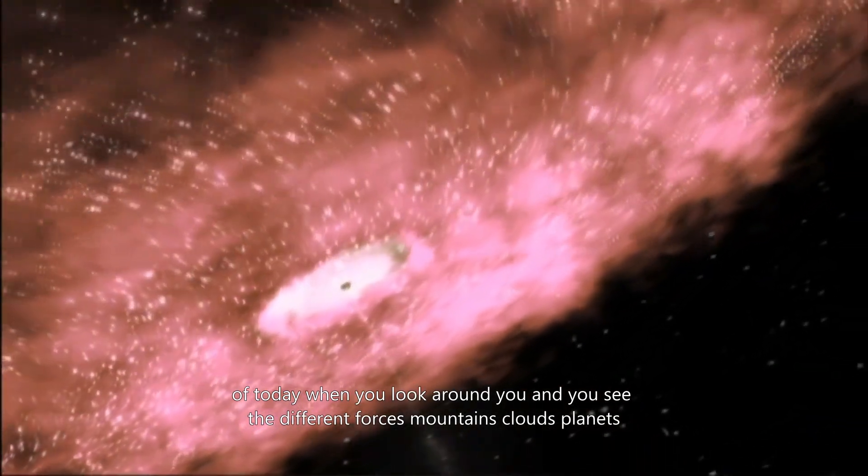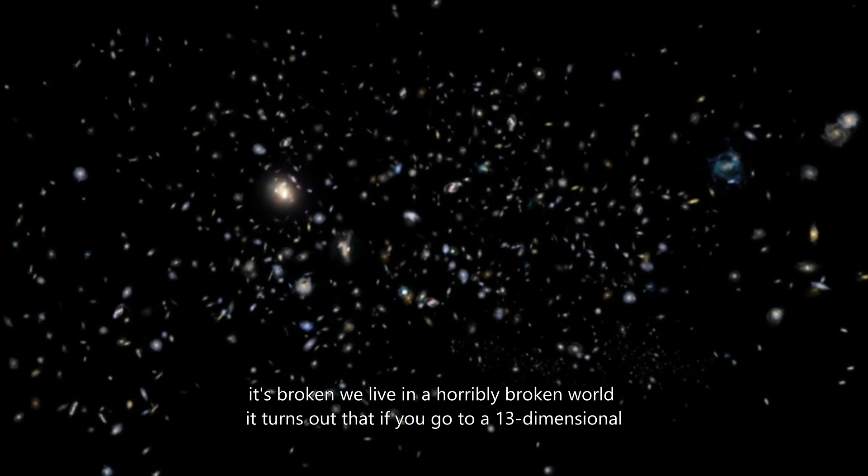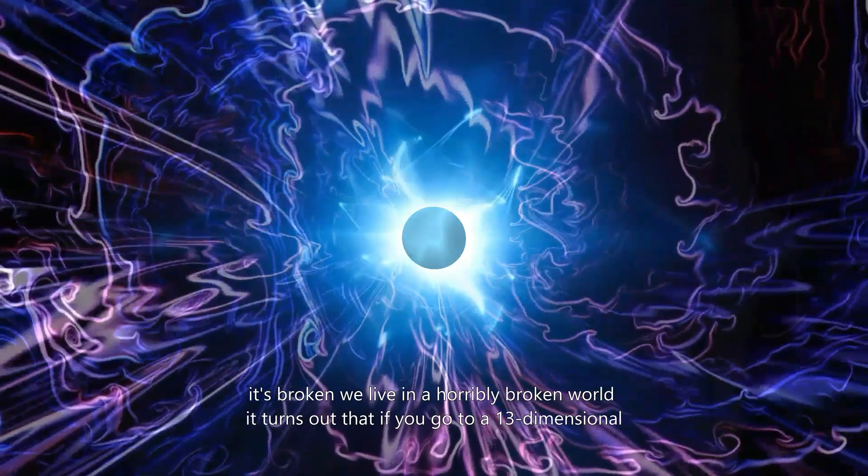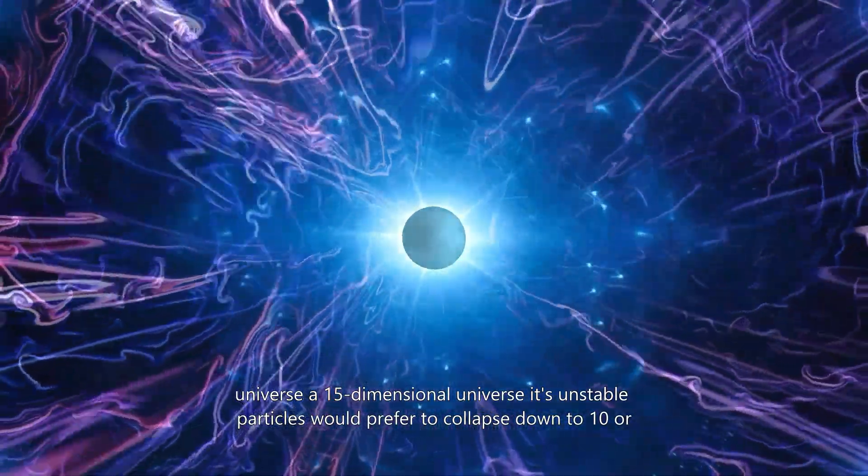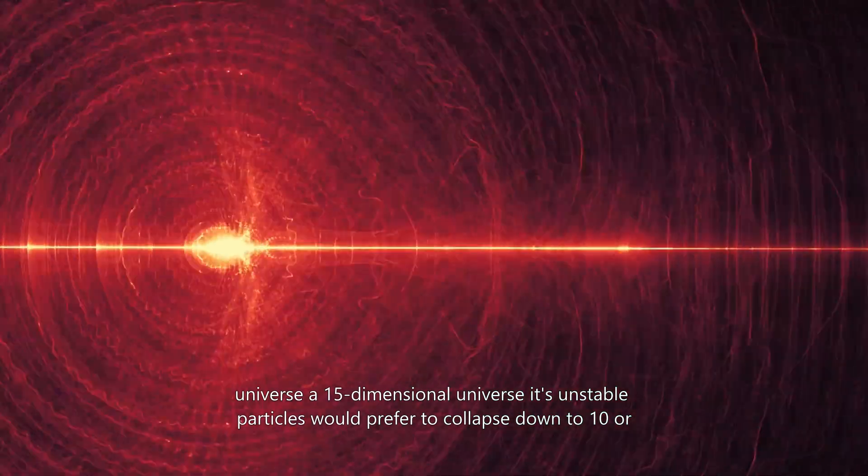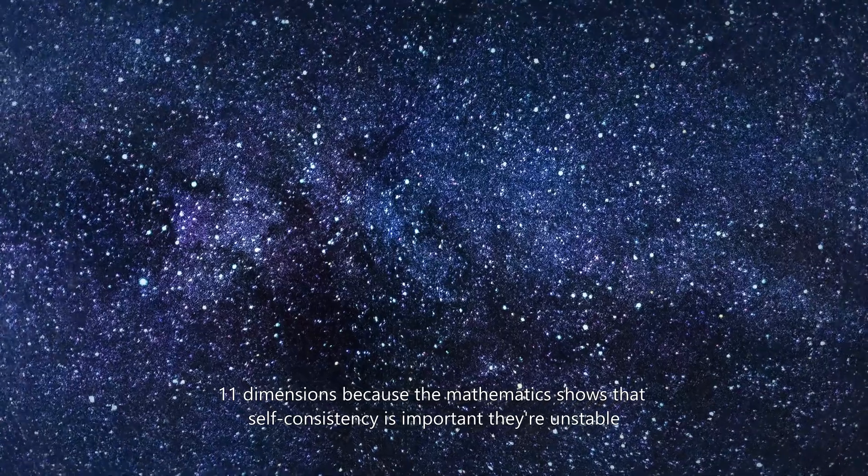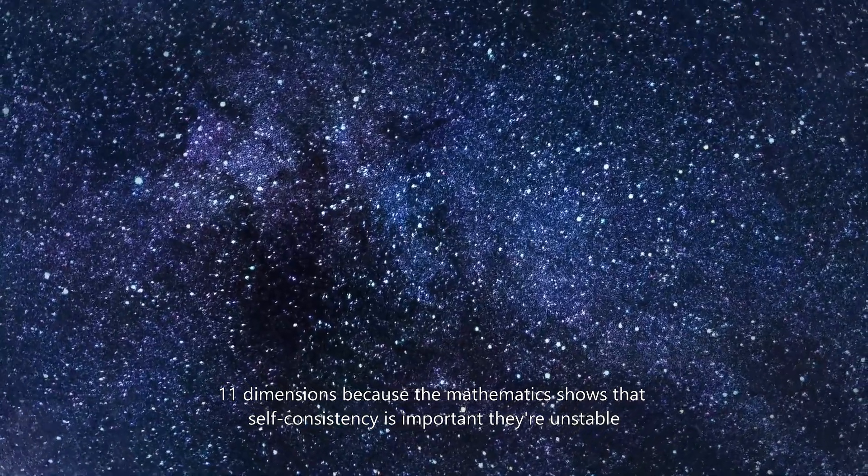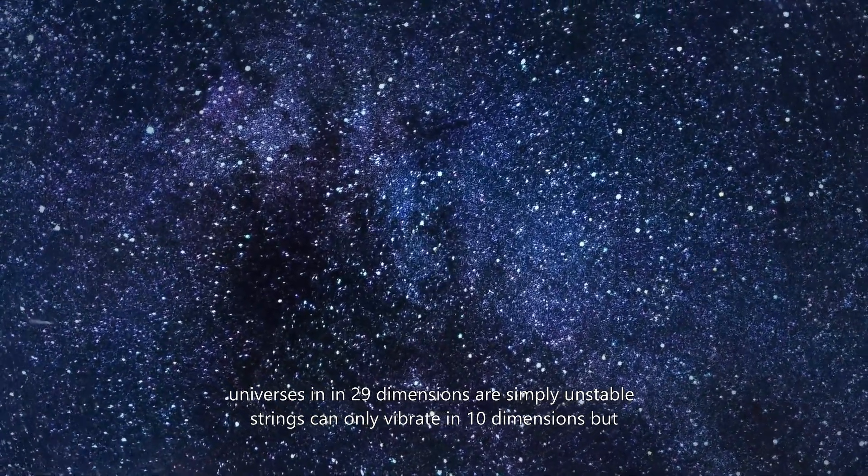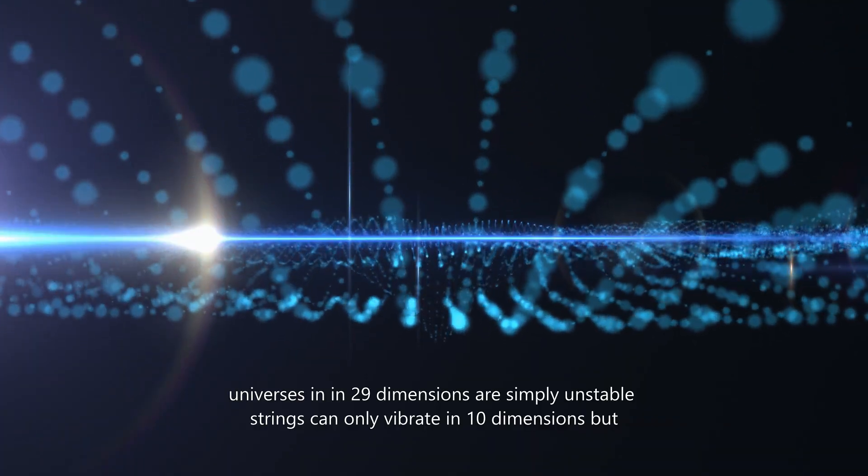When you look around you and you see the different forces, mountains, clouds, planets, it's broken. We live in a horribly broken world. It turns out that if you go to a 13-dimensional universe, a 15-dimensional universe, it's unstable. Particles would prefer to collapse down to 10 or 11 dimensions, because the mathematics shows that self-consistency is important. They're unstable. Universes in 29 dimensions are simply unstable. Strings can only vibrate in 10 dimensions.